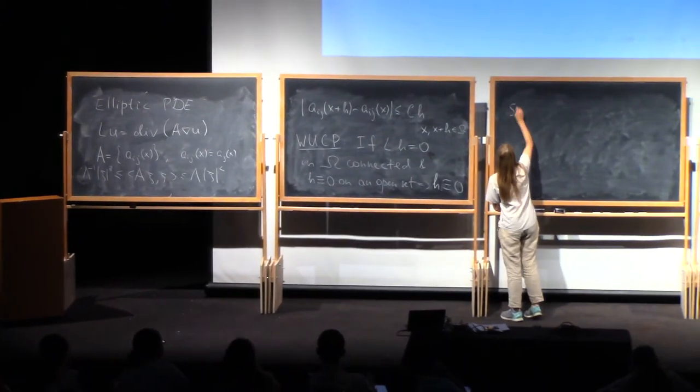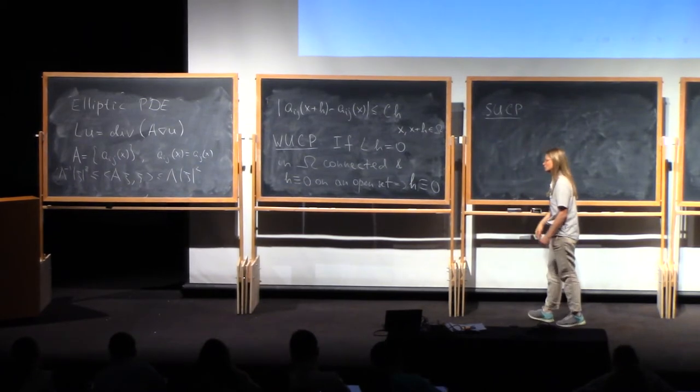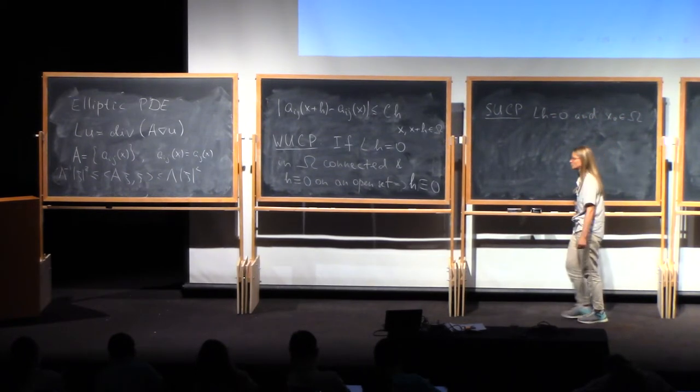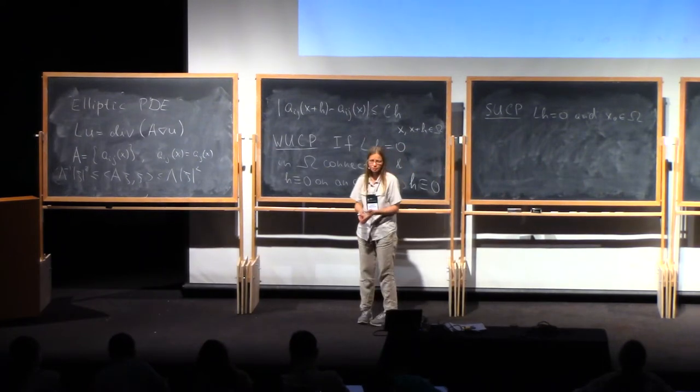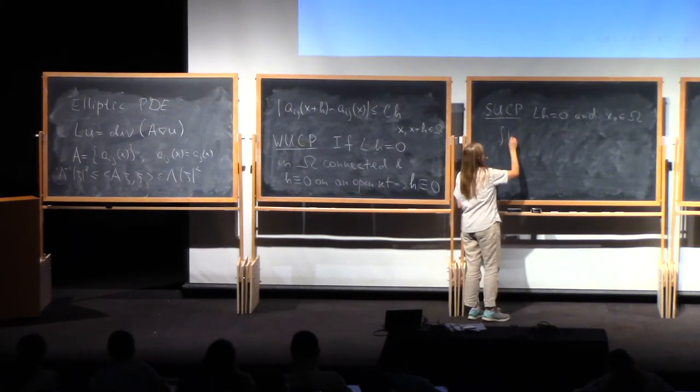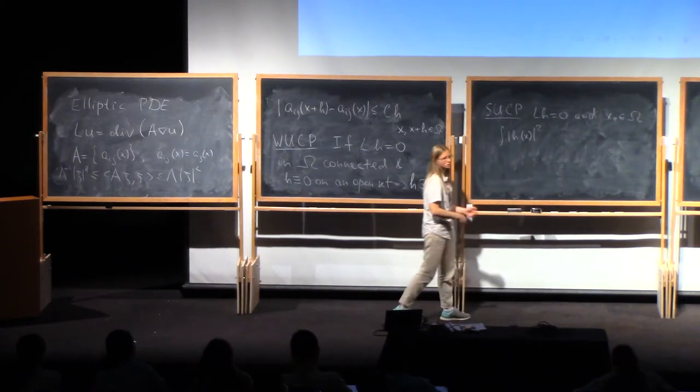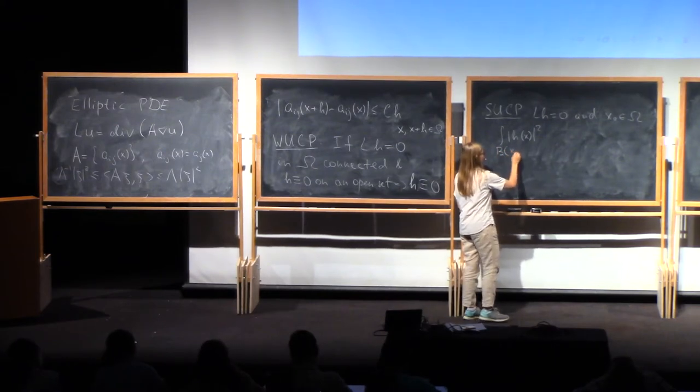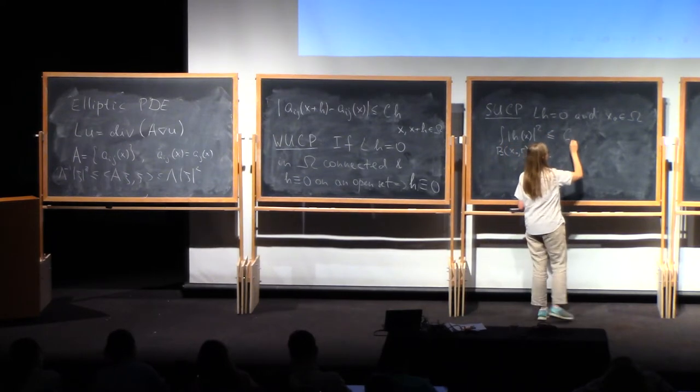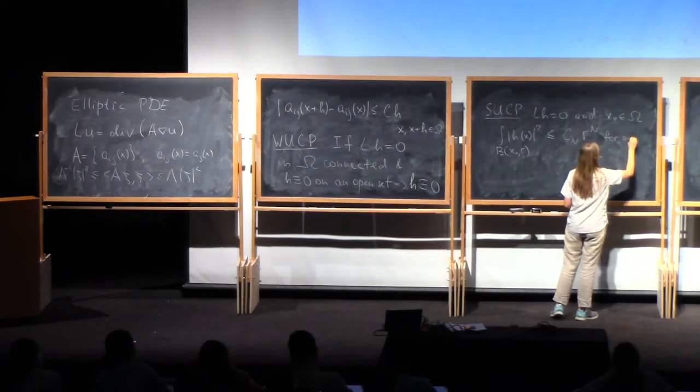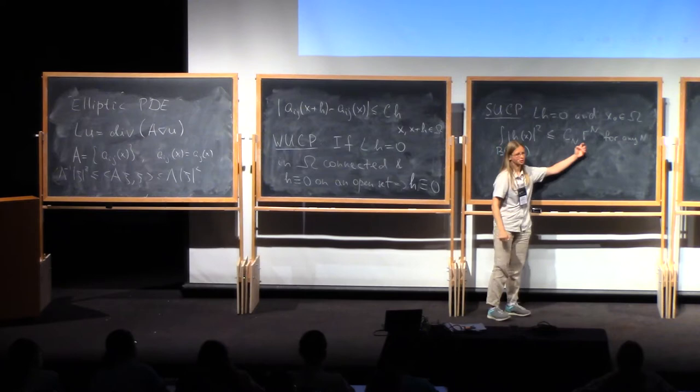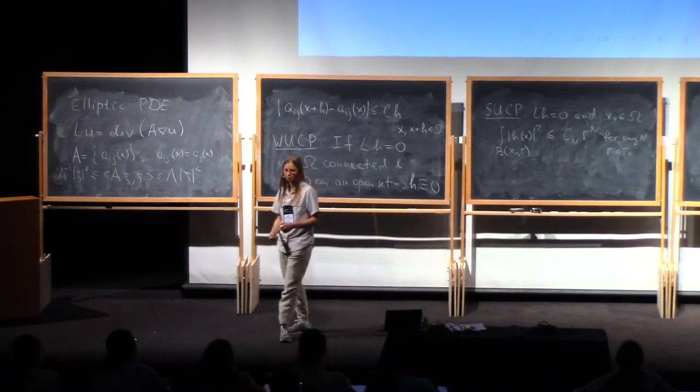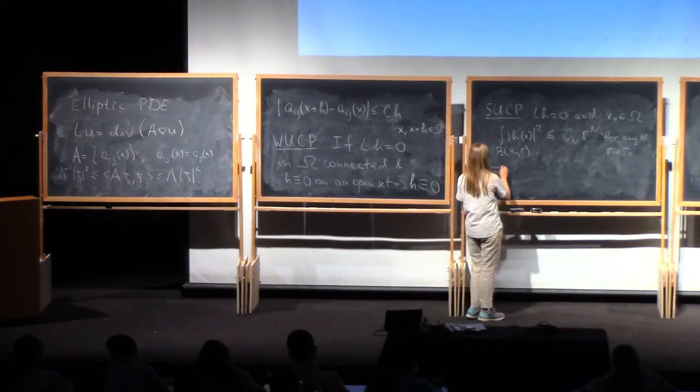Moreover, there is strong unique continuation principle that tells you that if you have a solution to this equation and one point in this connected domain where solution vanishes of infinite order, to formulate it in a right way, when we don't have smoothness of solution, we say that the integral over a ball of radius r is bounded by r to the power n for any n or small enough. So we have a vanishing of infinite order in this integral sense, then the function is zero.